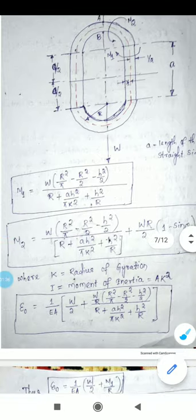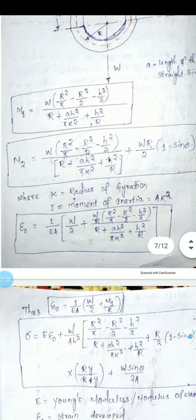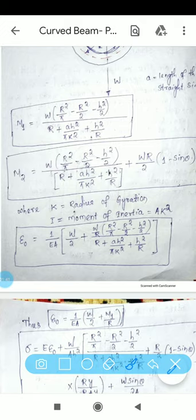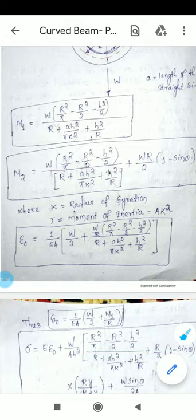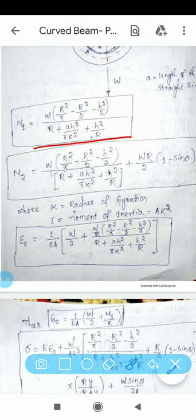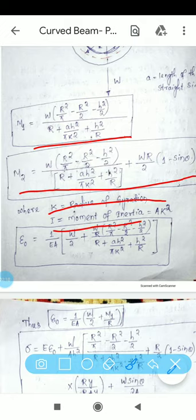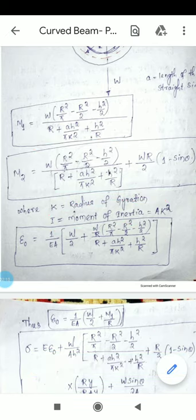Remember this expression for M1: W into R squared by pi minus R squared by 2, divided by R plus a plus R squared divided by pi K squared plus R squared by a. This is the expression for M2, where K is the radius of gyration and I is the moment of inertia.